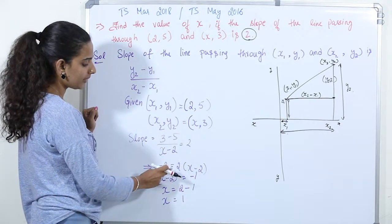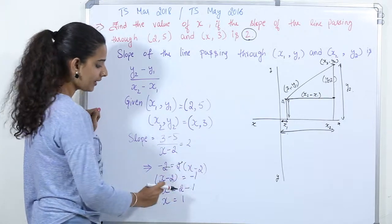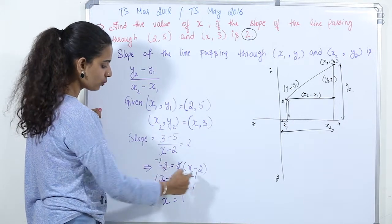Now, if you divide it by 2, then this 2 and this 2 gets cancelled. So, we are left with (x minus 2), which is equal to minus 1.